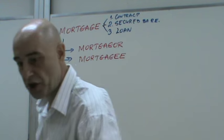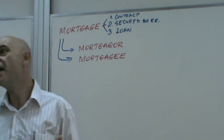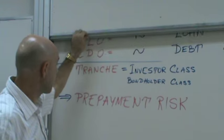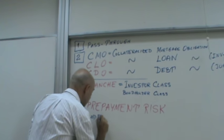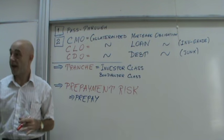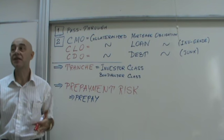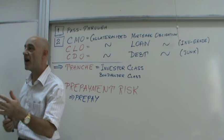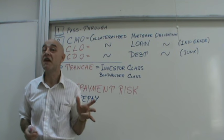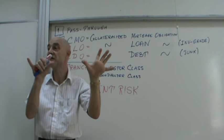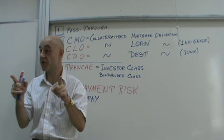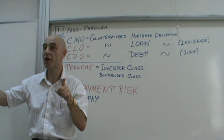The mortgagee — the borrower — has the right at any point in time to prepay principal early and in advance. So if you're supposed to pay $500 a month but instead pay $600, and of that $500 normally $400 is interest and $100 is principal, by paying $600 you now pay $200 in principal instead.